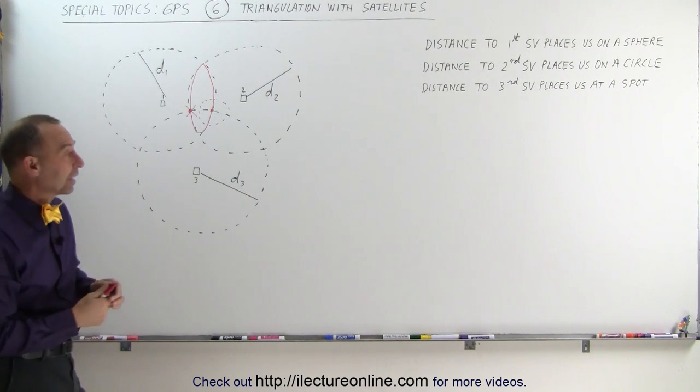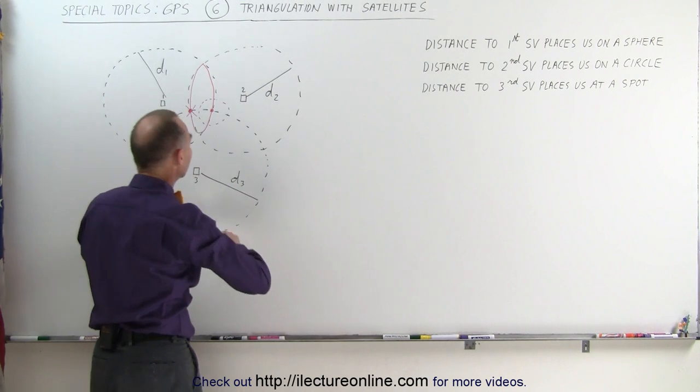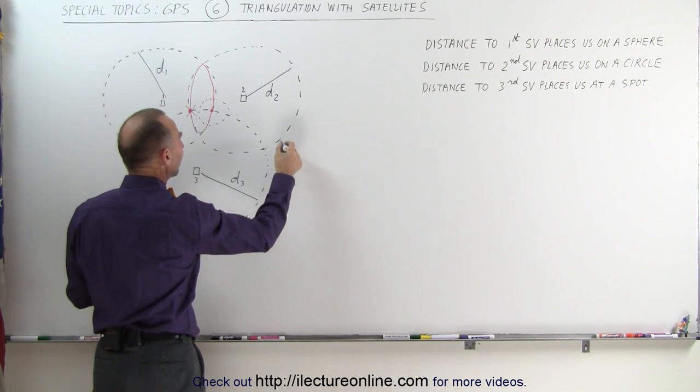That's where we need a fourth satellite. What we then do is we have a fourth satellite somewhere. Let me use a different color. Fourth satellite. Here it is. And again, we can measure our distance to the fourth satellite.